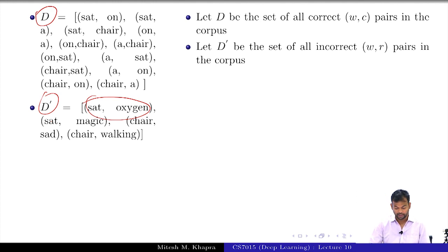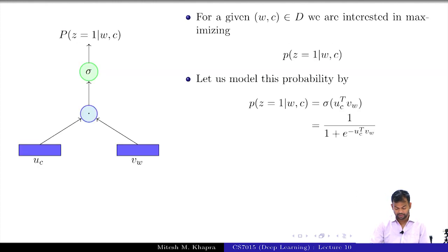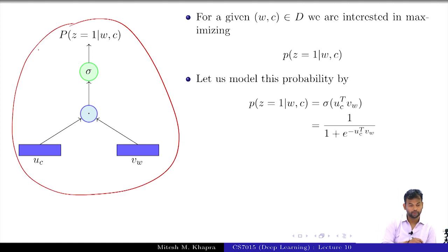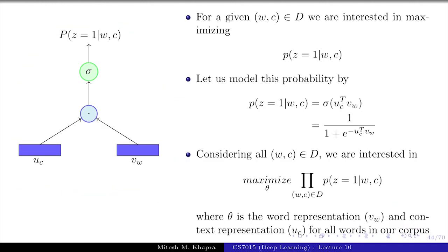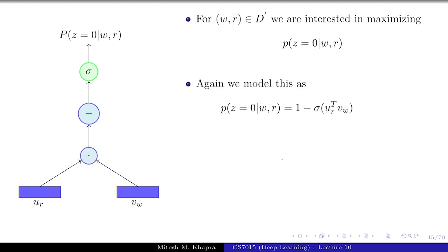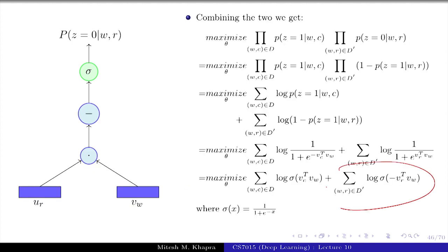We realized that this could be modeled using such a network where you take the dot product between the word representations and try to maximize this dot product for all the correct pairs by setting up your loss function accordingly.